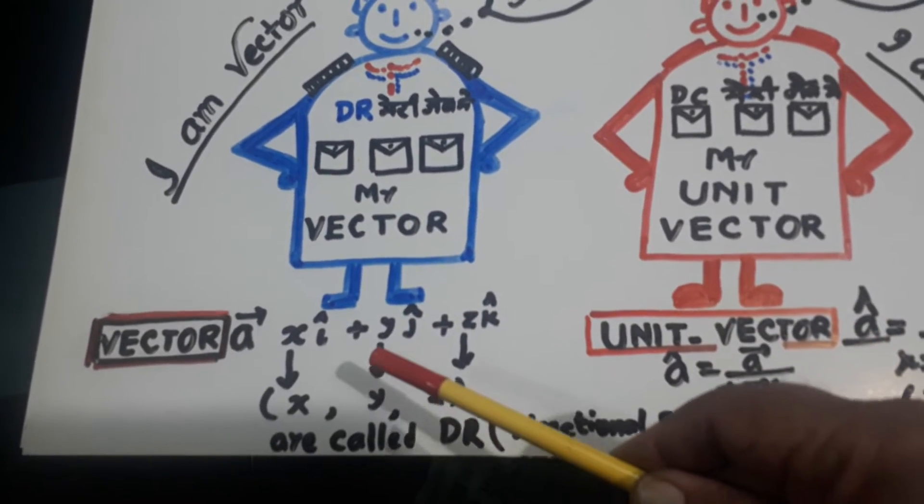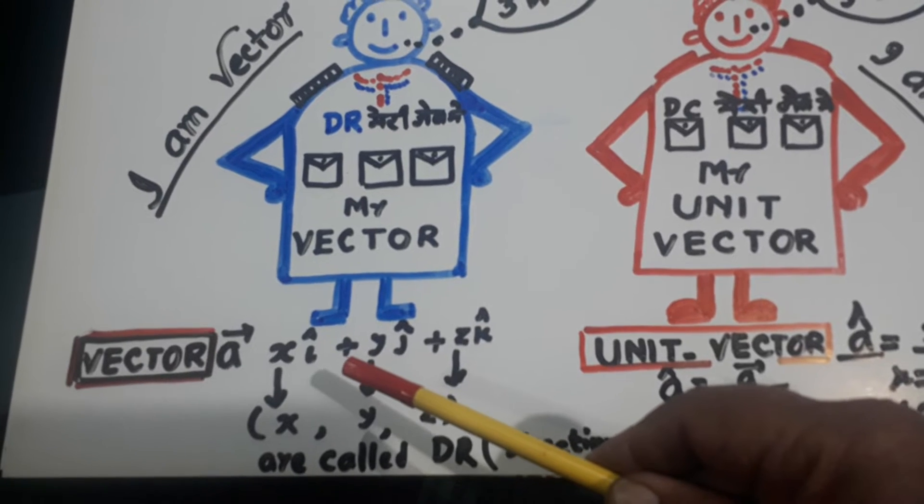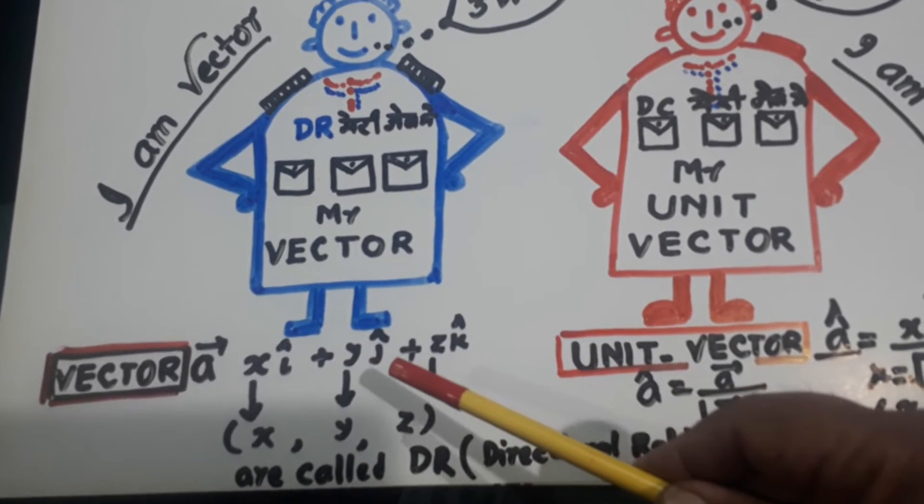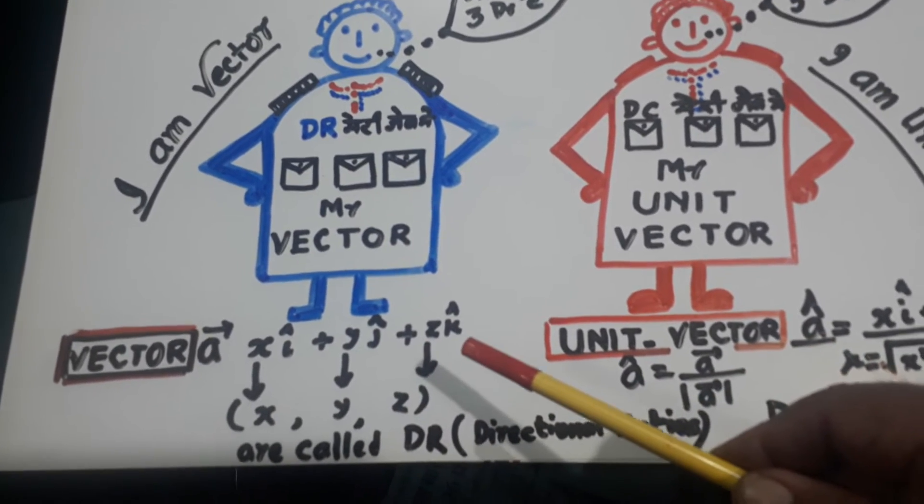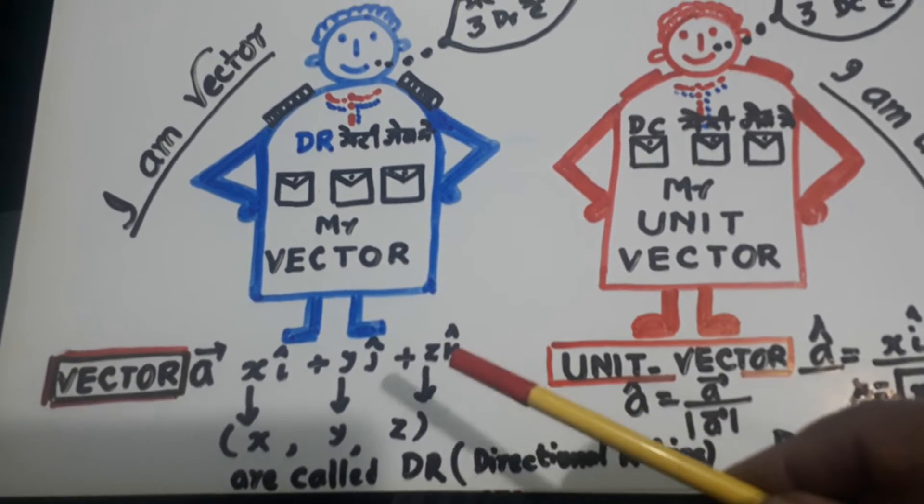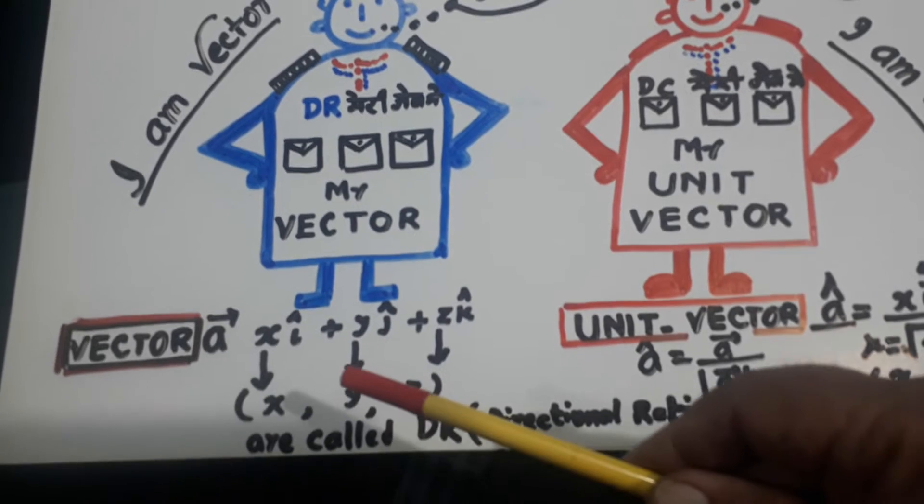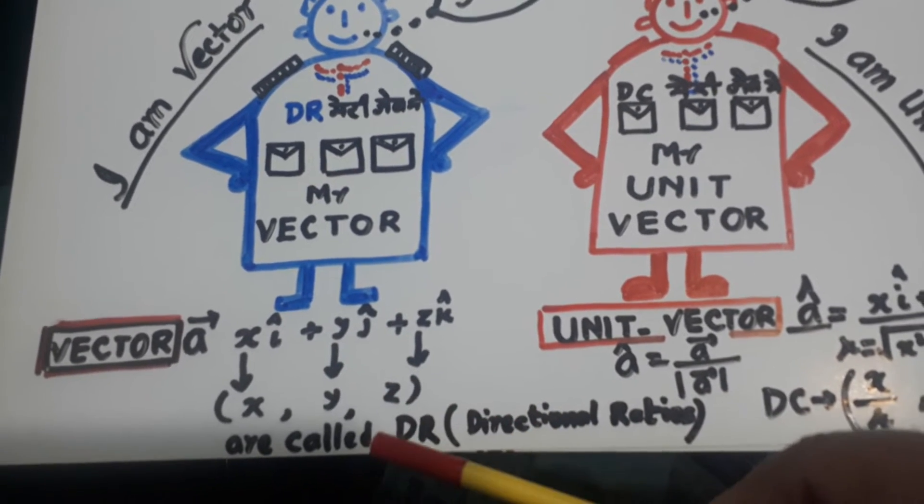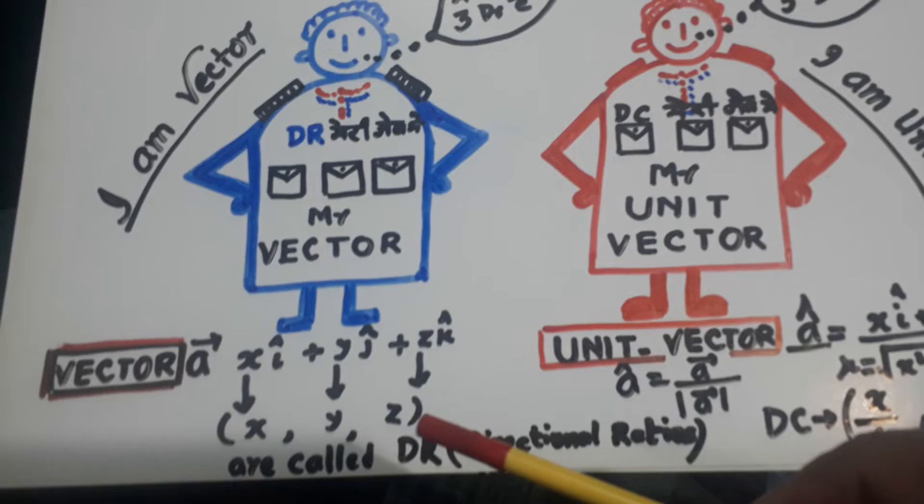Look here, here is the vector. x i cap plus y j cap plus z k cap. So this x, y and z,